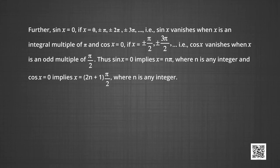We observe that sin x = 0 when x = 0, ±π, ±2π, ±3π, and so on — that is, when x is an integral multiple of π. And cos x = 0 when x = ±π/2, ±3π/2, that is, when x is an odd multiple of π/2. Thus, sin x = 0 implies x = nπ, and cos x = 0 implies x = (2n + 1)π/2, where n is an integer.